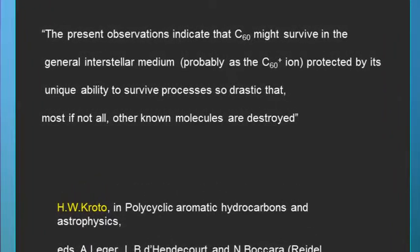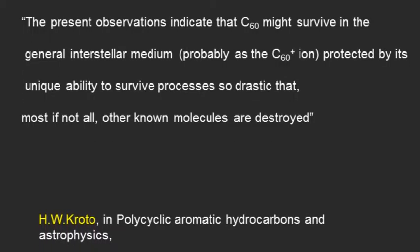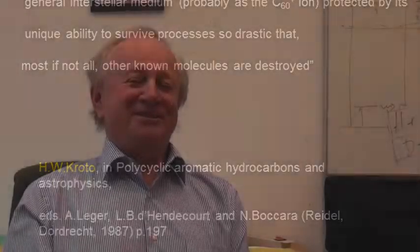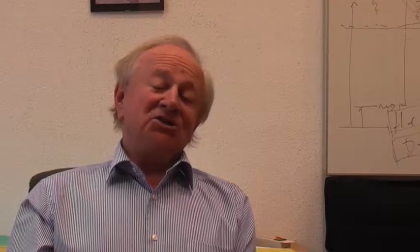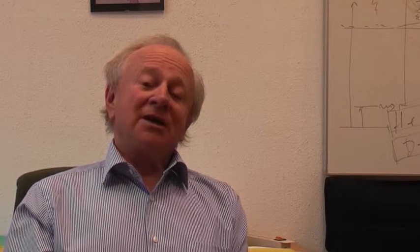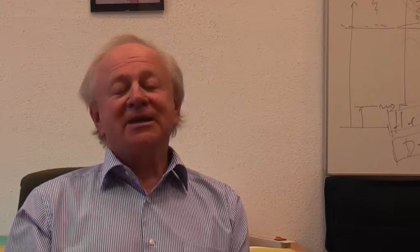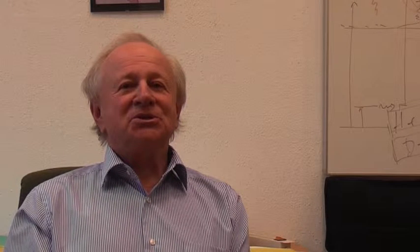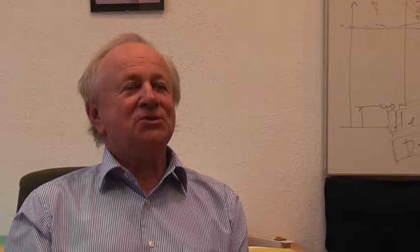With the discovery of C60 we started to discuss about the spectroscopy of C60 with Harry. Already in 1987, just two years after the discovery of C60, Harry Kroto pointed out in one of the early papers that we shouldn't forget C60 plus, because after all there's lots of ionizing radiation in space and in the diffuse interstellar medium, and it may well be that C60 plus is an important entity.